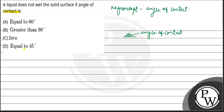So let's see what the question says. A liquid does not wet the solid surface if angle of contact is — so this is our surface. Suppose this is our solid surface, and on the solid surface there are two drops. One drop is wetting the surface — what does it mean to wet the surface?